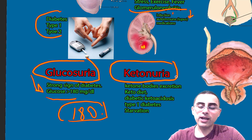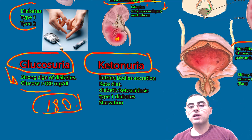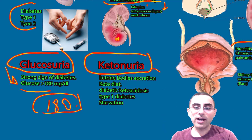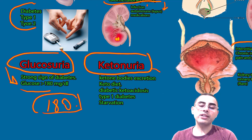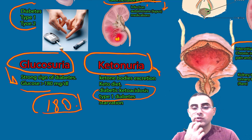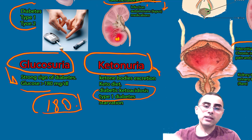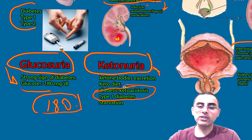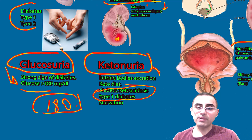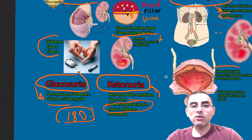Ketonuria means ketone bodies are present in the urine. It occurs when a person is on a ketogenic diet, not consuming enough carbohydrates, in a state of starvation, or during diabetic ketoacidosis. Diabetic ketoacidosis is a very serious condition usually associated with type 1 diabetes, and ketonuria may even be the first sign that a person has type 1 diabetes.